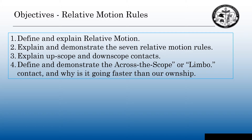The objectives for this presentation. At the end of this presentation, you will be able to: one, define and explain relative motion; two, explain and demonstrate the seven relative motion rules; third, explain up-scope and down-scope contacts; and fourth, define and demonstrate the across-the-scope or limbo contact and why it is going faster than our own ship.